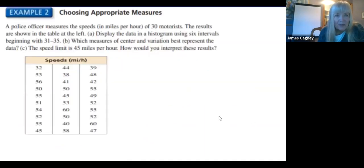Choosing the appropriate measure. A police officer measures the speed in miles per hour of 30 motorists. The results are shown in a table. Display the data in a histogram using six intervals. My first interval is 31 to 35. You've got to figure out you want even numbers in your intervals. This gives you the clue as to what they should be. What measures of center and variation best represent the data? So you need to decide what shape it is. The speed limit is 45 miles per hour. How would you interpret those results? Pause the video, work out this problem, and then turn it back on and see if you were right.